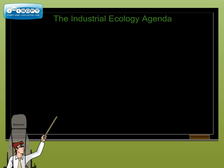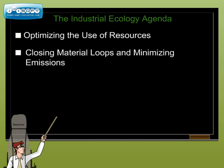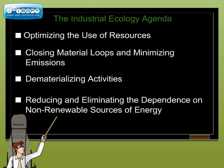The strategy for implementing the concepts of industrial ecology is often referred to as eco-restructuring and includes four main elements: optimizing the use of resources; closing material loops and minimizing emissions; dematerializing activities; and reducing and eliminating the dependence on non-renewable sources of energy.